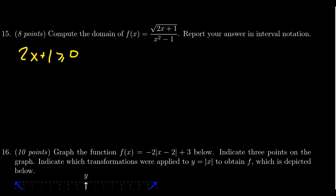So we need to solve this inequality. We can subtract 1 from both sides. We get 2x is greater than or equal to negative 1. Divide both sides by 2. We get x is greater than or equal to negative 1 half.